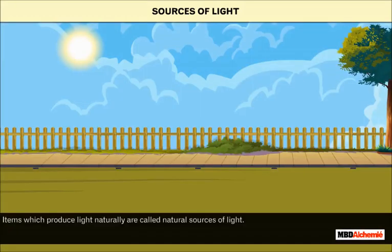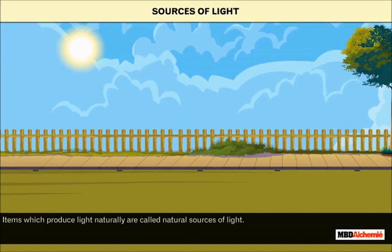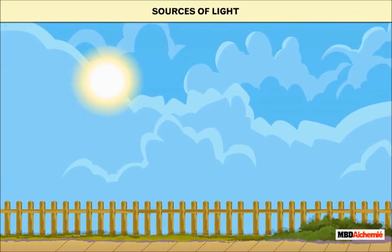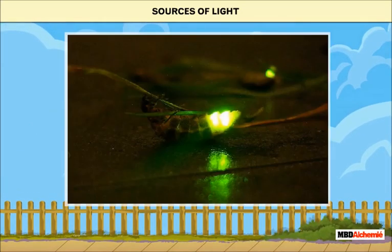Items which produce light naturally are called natural sources of light. For example, sun and glowworm.